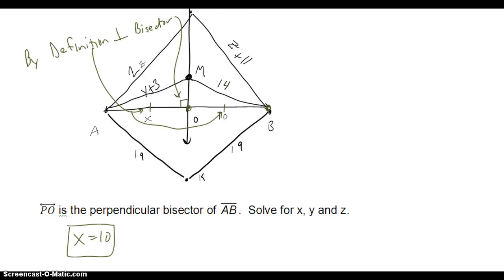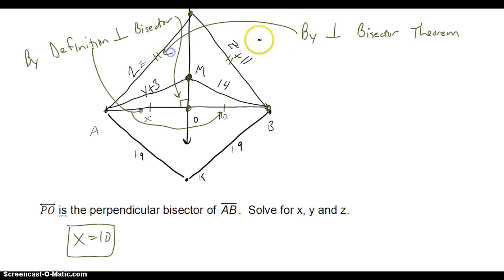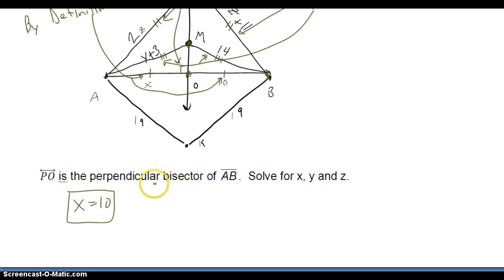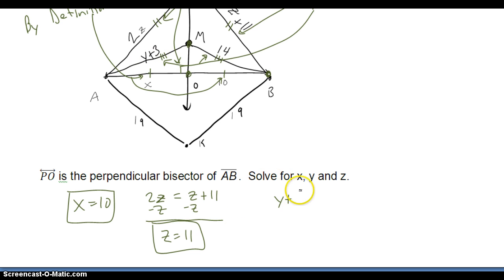I have some other things that I know are true. P and M are both on PO, so by the perpendicular bisector theorem, I know that this segment is congruent to this segment, and this segment is congruent to this segment. That gives me two other equations: 2z has to equal z plus 11, so z equals 11. And y plus 3 has to equal 14, so y equals 11.